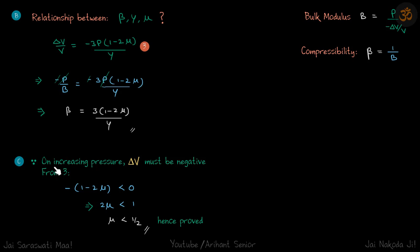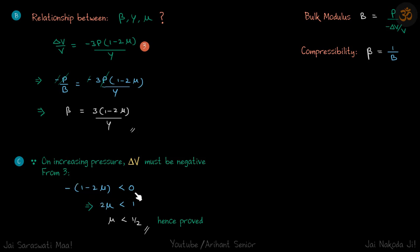For the third part, we need to show that mu must be less than half. Looking at the equation for volumetric strain: if pressure is positive, then delta V must be negative. So the quantity minus 3p(1 minus 2mu)/Y must be negative. Since p, 3, and Y are all positive, we need negative of (1 minus 2mu) to be less than 0, which means 2mu must be less than 1, therefore mu is less than half. Hence proved.